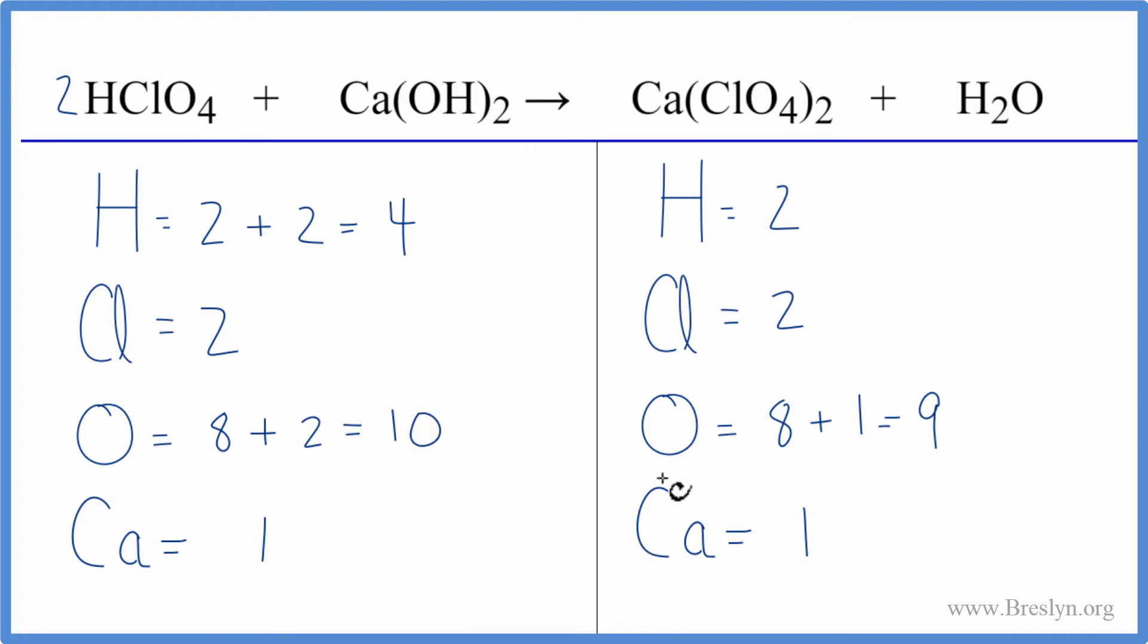At this point, it looks like if we balance the water, we have four here and two here for the hydrogens, so we can put a two here. That should fix the hydrogens, and it might even fix the oxygens. Let's try that. We have the two times the two. That gives us four. The hydrogens are balanced.